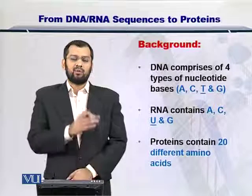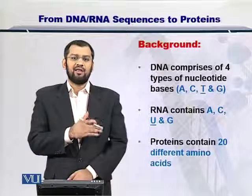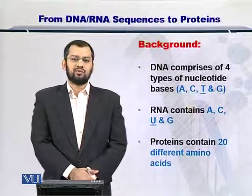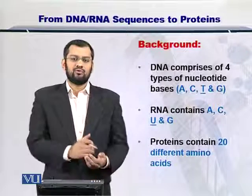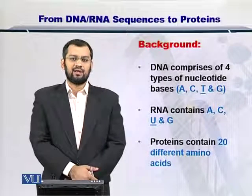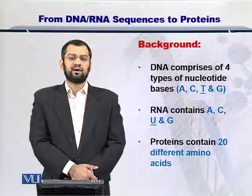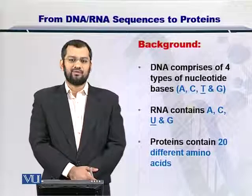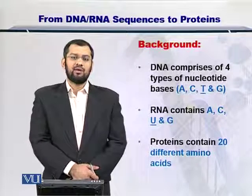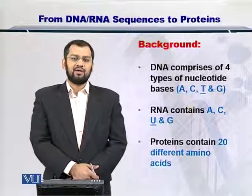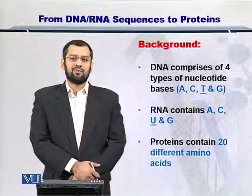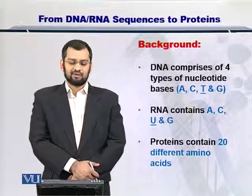However, once the RNA translates into proteins — or the information goes into the protein level — there are 20 different types of amino acids. So any protein may contain from these 20 different types of amino acids.